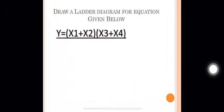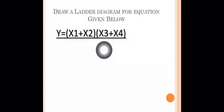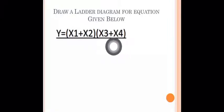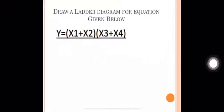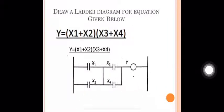Similarly, we have the equation Y = (X1 + X2)(X3 + X4). The first two switches X1 and X2 are in parallel. The second two switches X3 and X4 are also in parallel. Then these two parallel groups are connected in series with each other to form the complete ladder diagram.